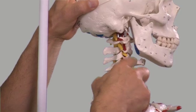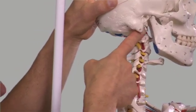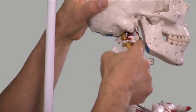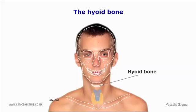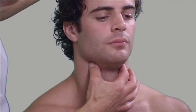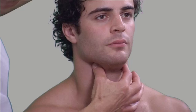It does not articulate with any other bone; it is held in place by ligaments and muscles. The hyoid bone can be palpated using a gentle grip between the index finger and the thumb. When the throat muscles are relaxed, it can be moved from side to side.